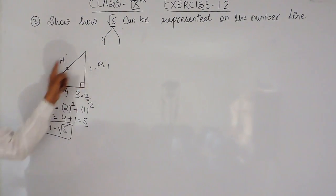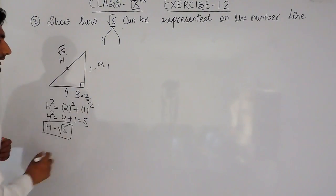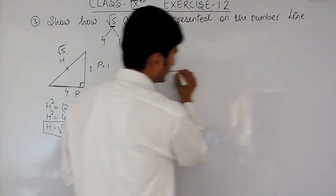So, this is how, first of all we have to use Pythagoras theorem to convert this into a right-angled triangle where this is 1, this is 2 and this is root 5. Okay, now this is root 5. Now, same thing, I have to draw on a number line.